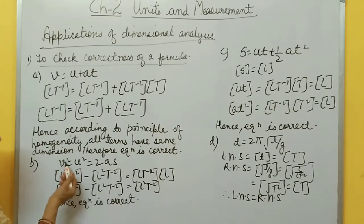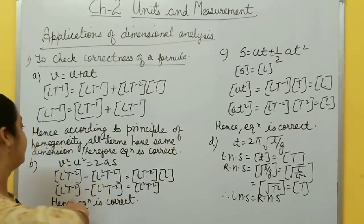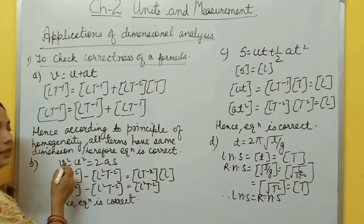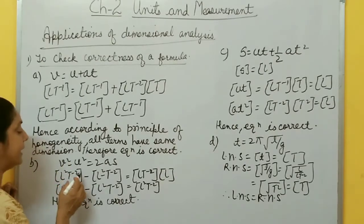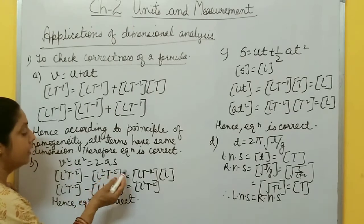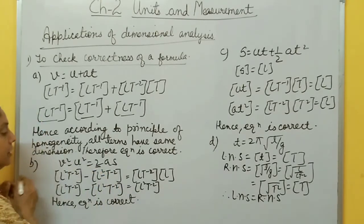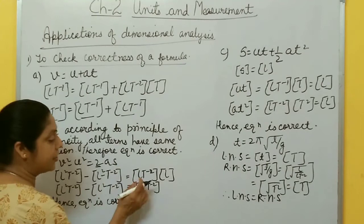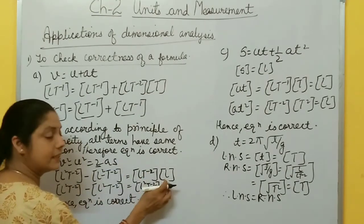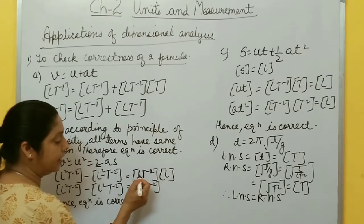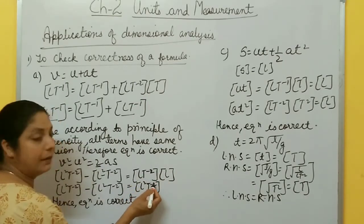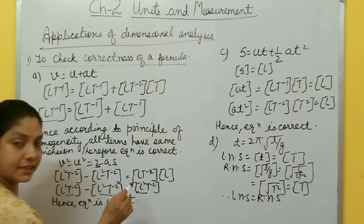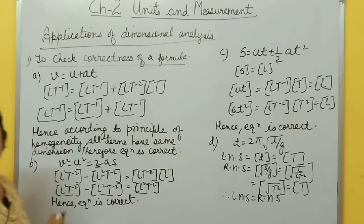Let us check the second equation: v² − u² = 2as. Dimension of v² is L²T⁻², and dimension of u² is also L²T⁻². On the right-hand side, 2 is a constant with no dimension. Dimension of acceleration a is LT⁻², and dimension of s is L, so a × s gives L²T⁻². All terms on both sides have dimension L²T⁻², so this equation is also dimensionally correct.